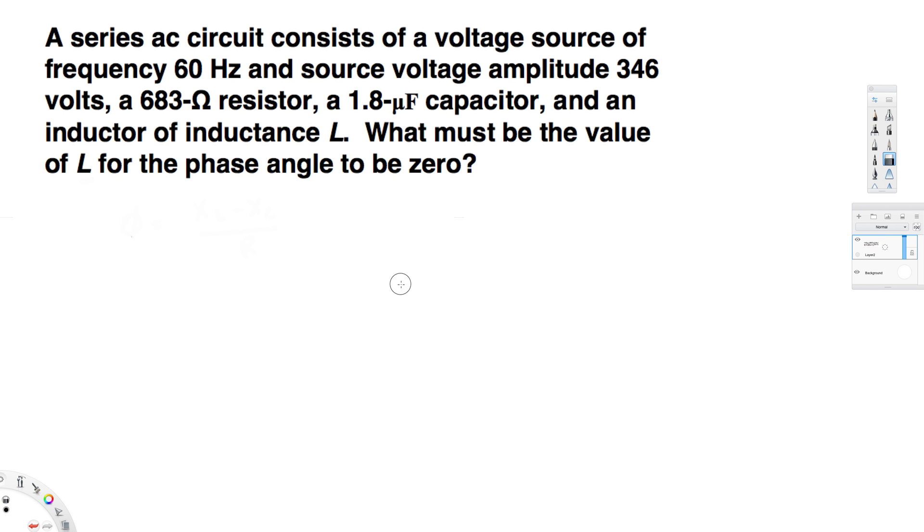Let's look at this problem. This question is asking: A series AC circuit consists of a voltage source of frequency 60 Hz and source voltage amplitude 346 volts, a 683-ohm resistor, a 1.8 microfarad capacitor, and an inductor of inductance L. What must be the value of L for the phase angle to be zero?